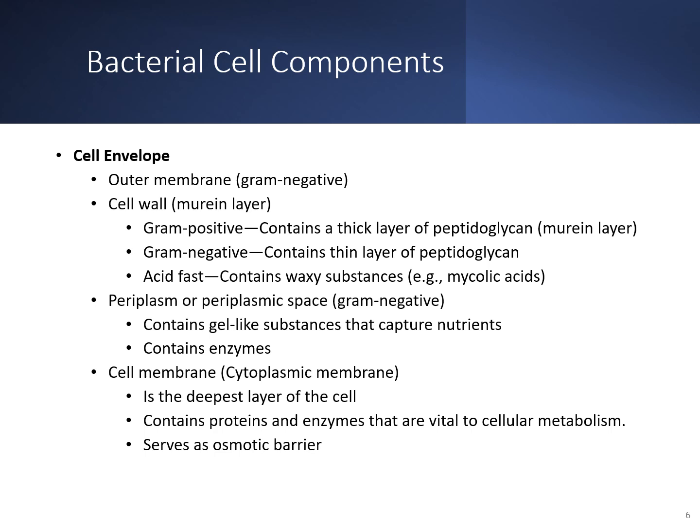Looking at the outside of the cell or cell envelope: gram negative organisms have an outer membrane plus a thin peptidoglycan layer, while gram positive organisms have a very thick peptidoglycan layer. Acid fast bacteria have a waxy substance on the outside. The periplasmic space, found in gram negatives, contains a gel-like substance that captures nutrients and contains enzymes. The cell membrane or cytoplasmic membrane is the deeper layer of the cell; it contains proteins and enzymes vital to cell metabolism and also serves as an osmotic barrier.